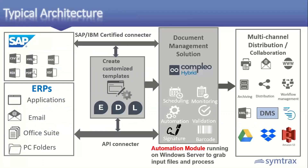Let's discuss in detail how this can be achieved. On screen you can see the typical architecture. On the left-hand side is SAP ERP — for SAP and IBM there are certified integrations. For other ERPs or applications, we can integrate using an API connector. Documents can also be captured from email using an email connector or via a PC folder approach. When a document is processed from the ERP, it is captured in Compleo either via a SAP-certified connector or API connector, a predefined template is applied automatically, and the final output is created and distributed.